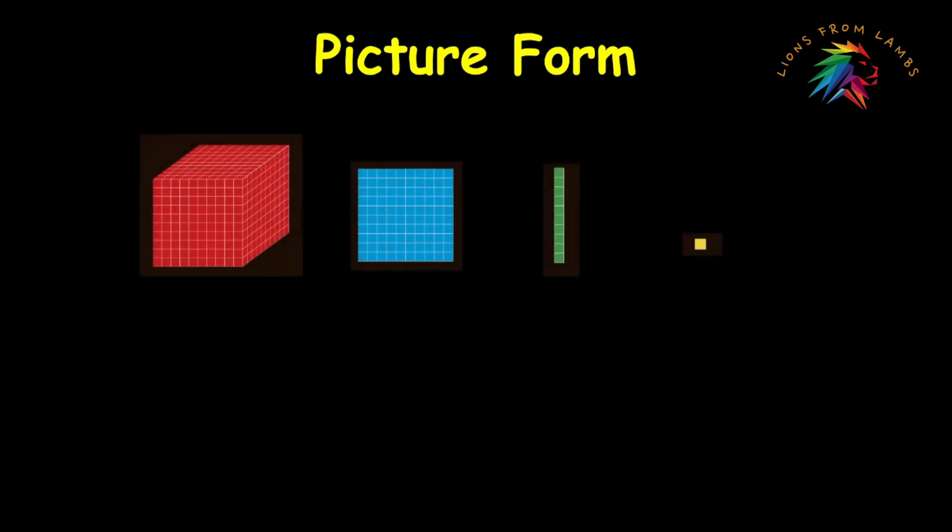So when we look at the base 10 blocks, we can see that we've got the units, the little yellow square. We've got the rods representing the tens place. We've got the flats representing the hundreds place. And the cube represents the thousands place.